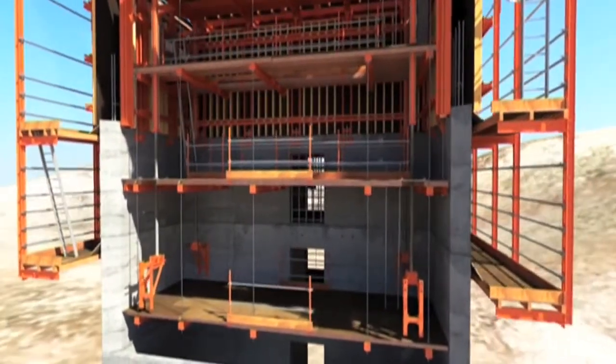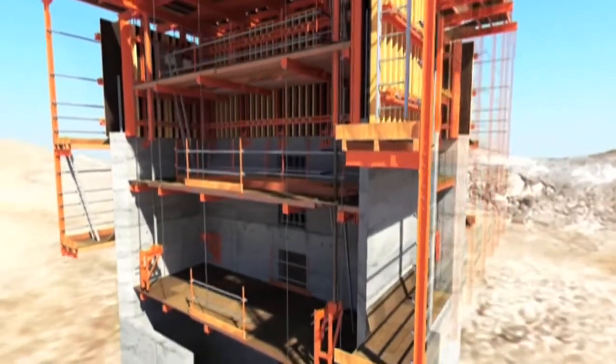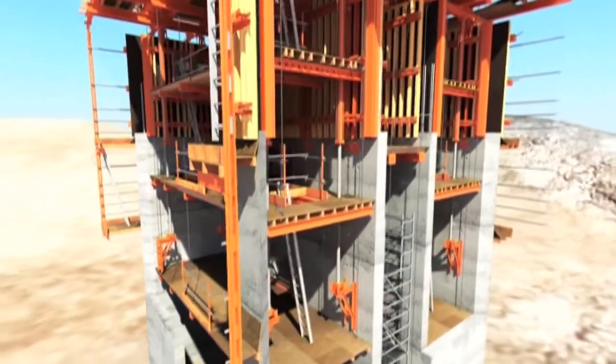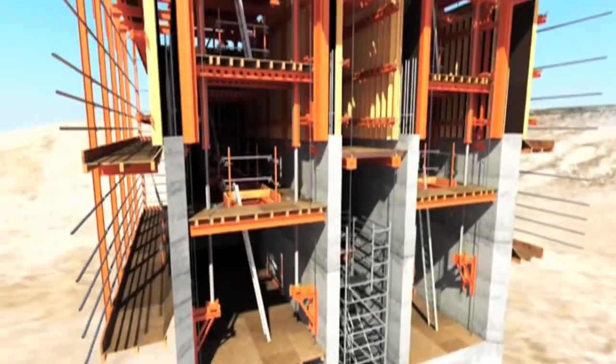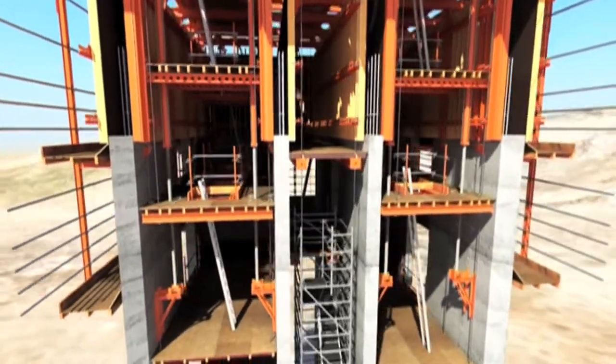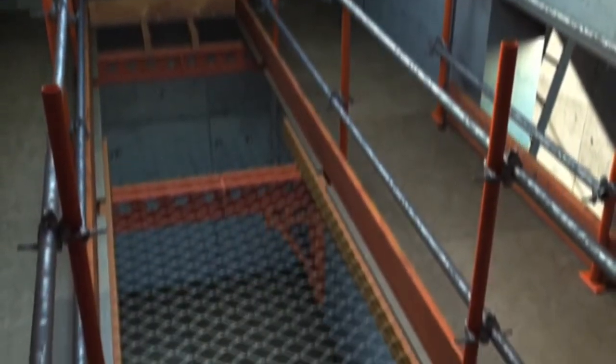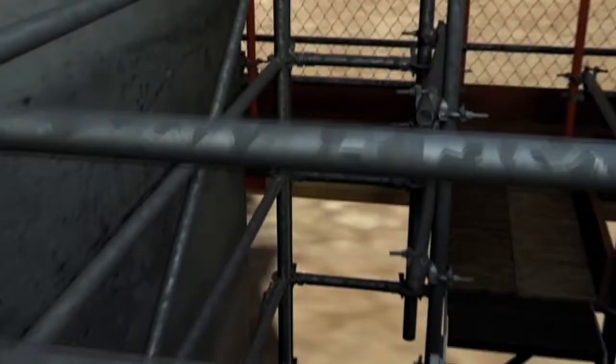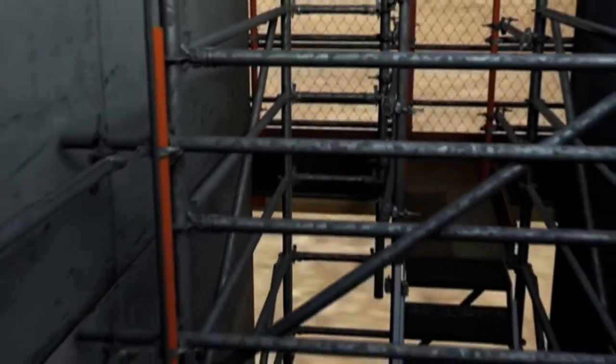External platforms are fitted to provide a safe working area and access around the entire core. The TruLift system is designed to provide large platform areas and integrated access, incorporating handrails as standard and enclosed ladder access, ensuring ease of use and the continued safety of your operatives.